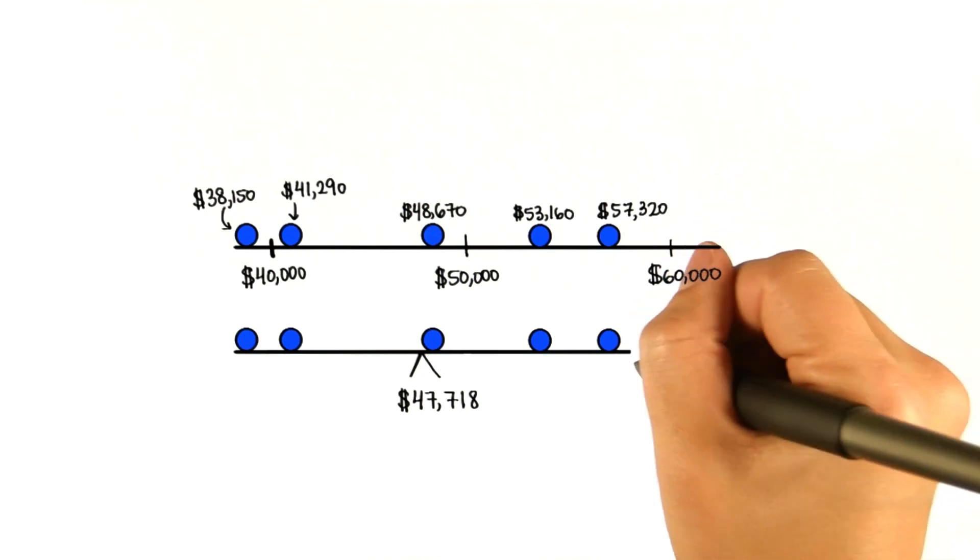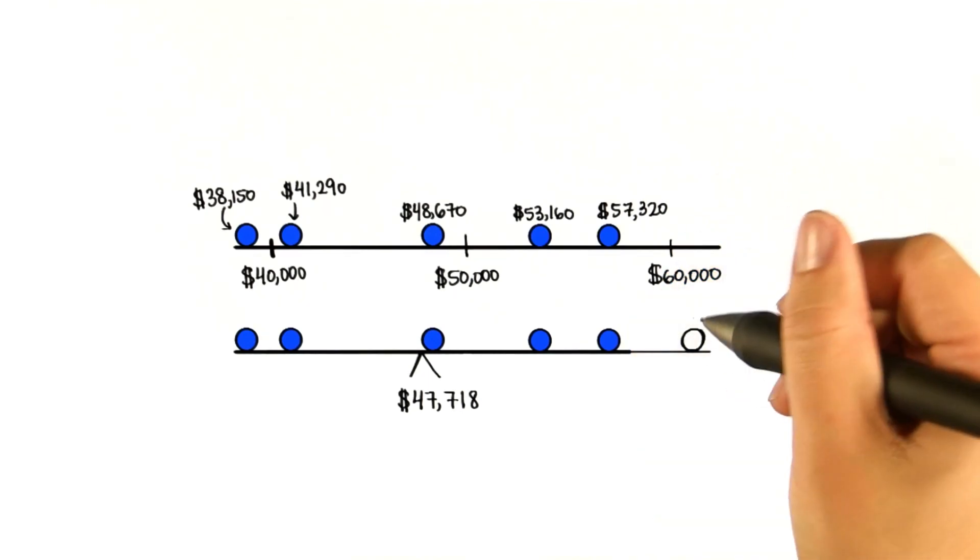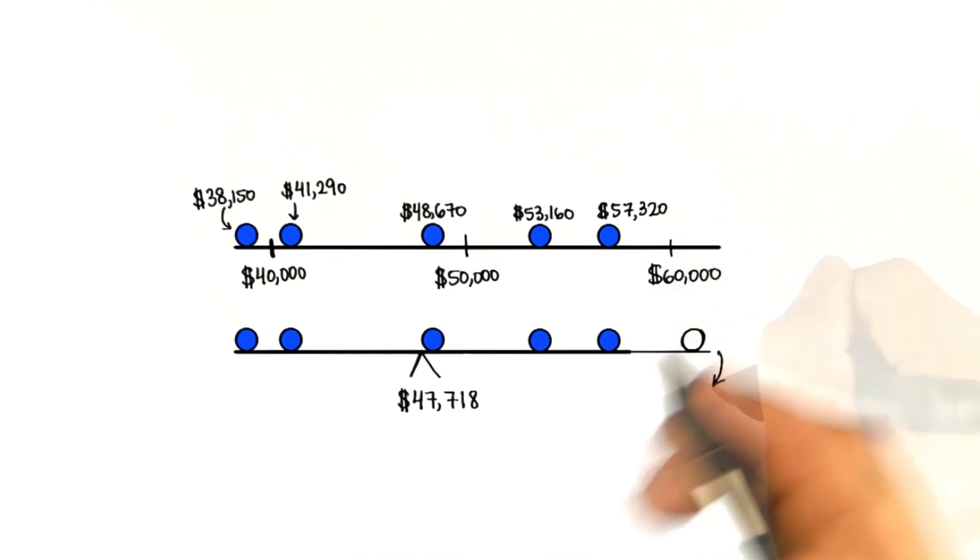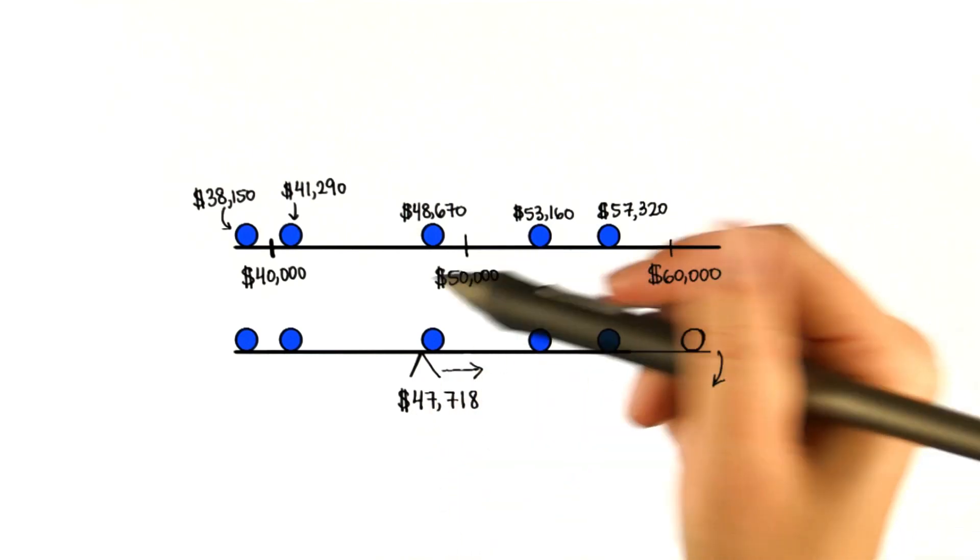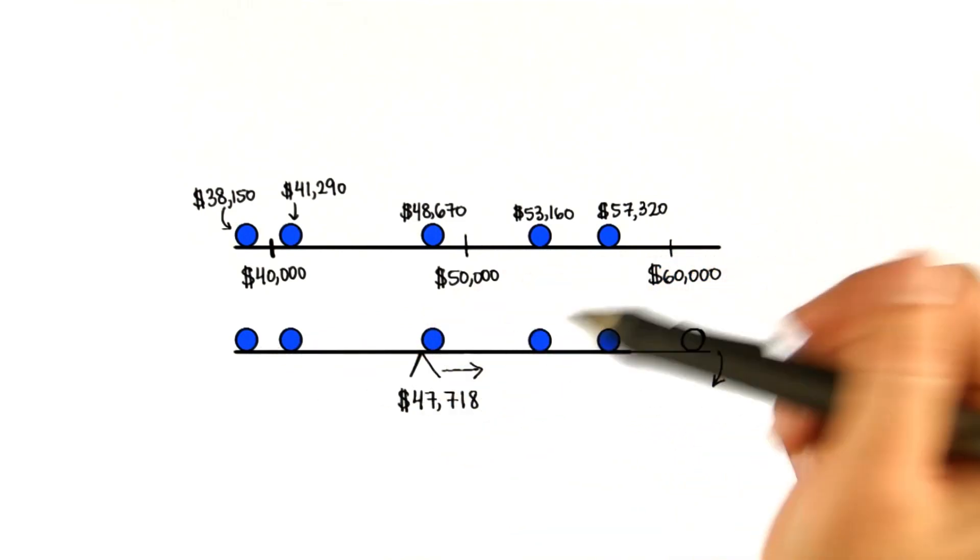Now, if we were to add another ball, say here, then the teeter-totter would tip. Therefore, the pivot would have to move this way so that it keeps balancing. So you can see that all scores affect the mean.